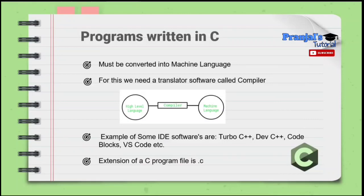Some popular IDE software options are Turbo C++, Dev C++, Code Blocks, VS Code, and others. We will use one of these to write and run our C programs. The C program file extension is .c — so the extension of a C program file is .c.